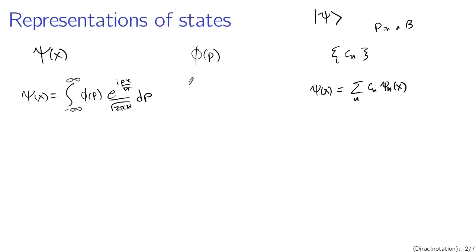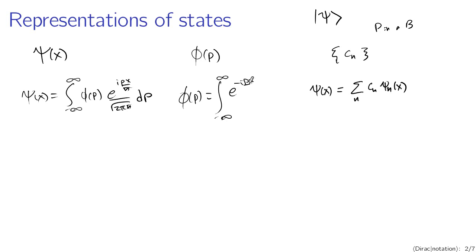You can also go back, finding phi of p from psi of x. Phi of p is equal to the integral from minus infinity to infinity of e to the minus i p x over h-bar divided by root 2 pi h-bar, multiplied by psi of x, dx. So given these various representations, I can convert from one to the other.